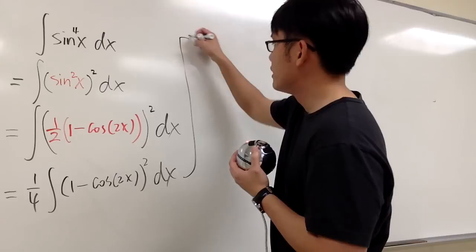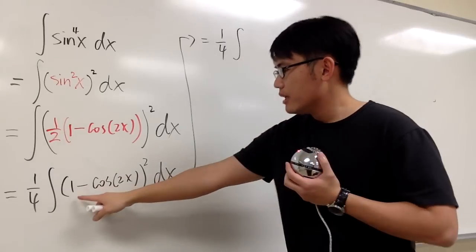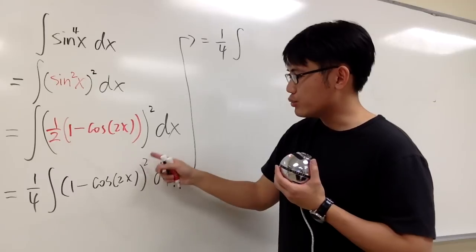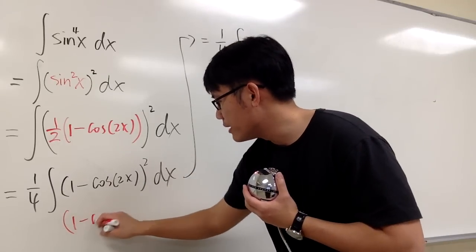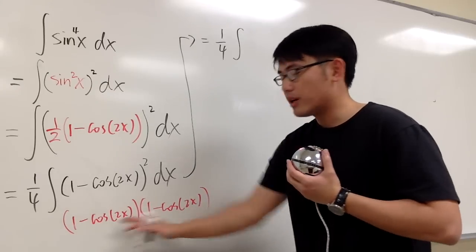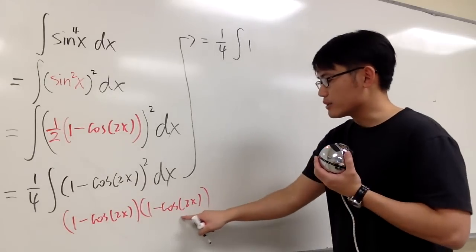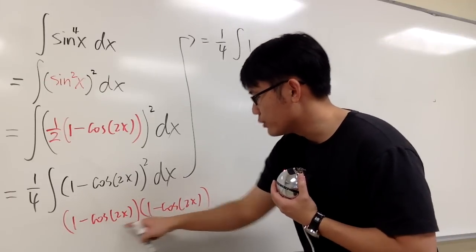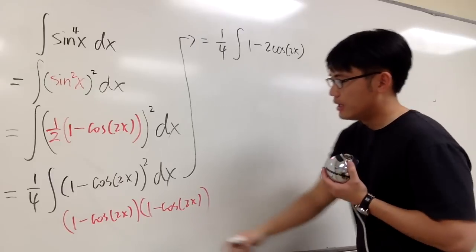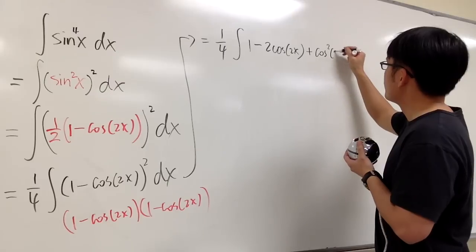Now we have the 1 over 4 in front and we still have the integral. How can we integrate this? We have to expand it out. 1 minus cosine of 2x, to the second power: write it as 1 minus cosine of 2x, times 1 minus cosine of 2x, and multiply it out. 1 times 1 is just 1. Then 1 times negative cosine of 2x, along with negative cosine of 2x times 1 — we have two of them, so minus 2 cosine of 2x. And negative cosine of 2x times negative cosine of 2x gives positive cosine squared of 2x.